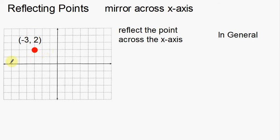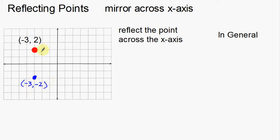Notice that the x-axis is right here, and it's two units away from this point. So the new point that I'm going to have is also going to be two units away from my mirror — two units away from my x-axis. So here's my new point: that is negative three, negative two. That right there is reflecting a point across the x-axis.